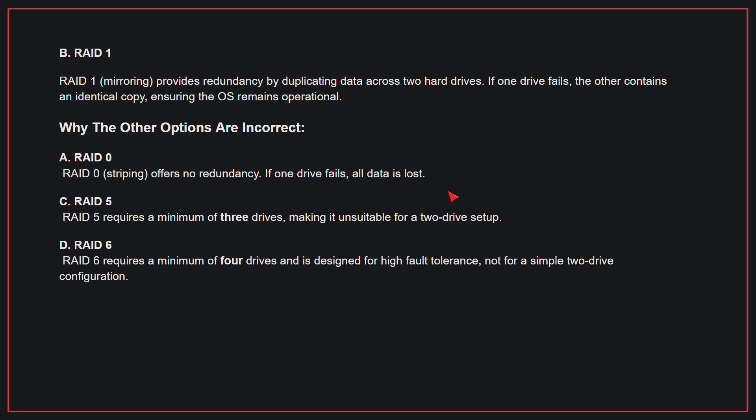Why the other options are incorrect? A, RAID 0: RAID 0 offers no redundancy; if one drive fails, all data is lost. C, RAID 5: RAID 5 requires a minimum of three drives, making it unsuitable for a two-drive setup. D, RAID 6: RAID 6 requires a minimum of four drives and is designed for high fault tolerance, not for a simple two-drive configuration. Therefore, the correct answer is B, RAID 1.